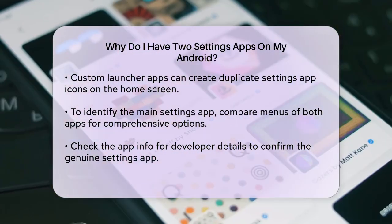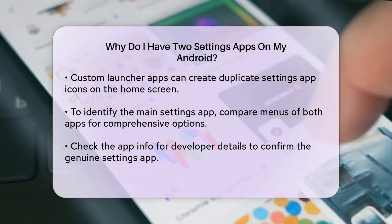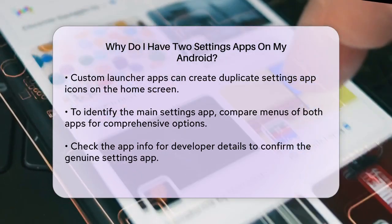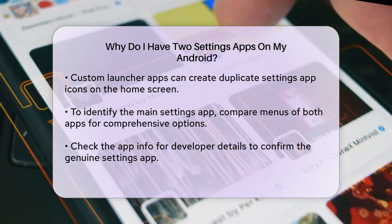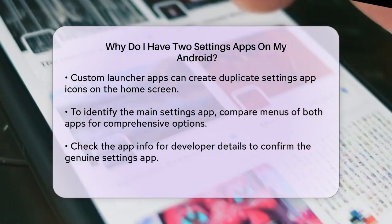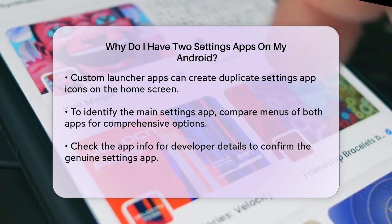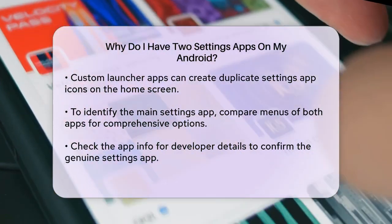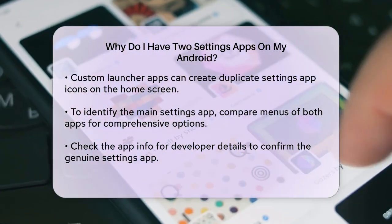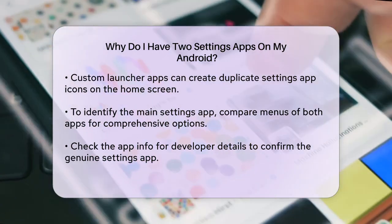To identify which settings app is the real one, open both apps and compare their menus. The genuine settings app will have a comprehensive range of options for managing your device's features, connectivity, display, security, and more.